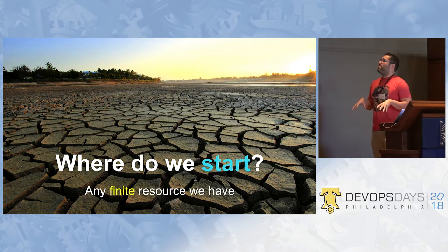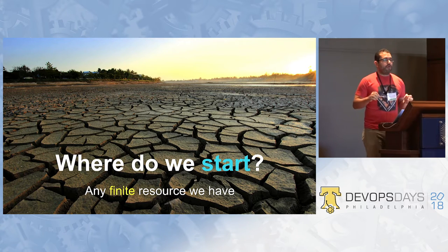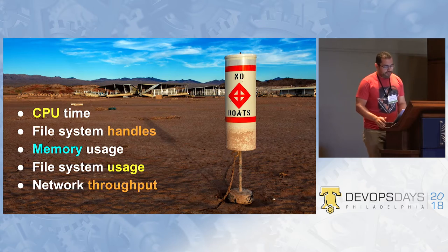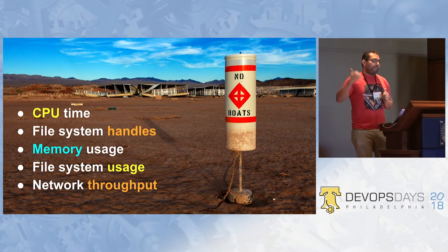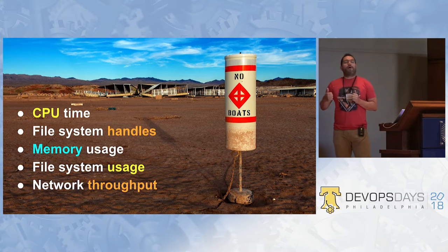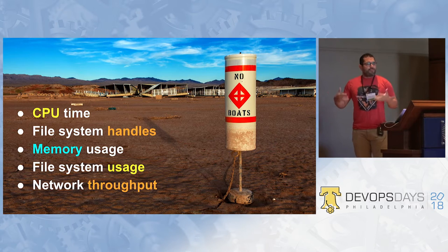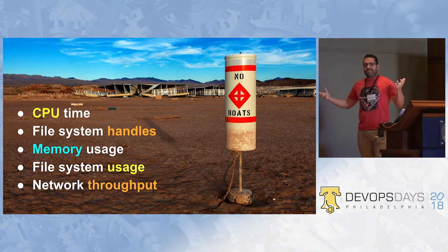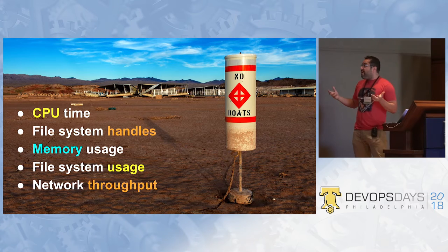The first metrics we should collect are for any finite resource we have. Any kind of finite resource should have some kind of metric being collected about it. For that, we have CPU time, file system handles, memory usage, file system usage, and network throughput. Many times I see people ask: aren't we running in the cloud? Should we actually be collecting metrics for all this? Isn't the cloud just a magical place where you can scale forever and never run out of these resources? No.